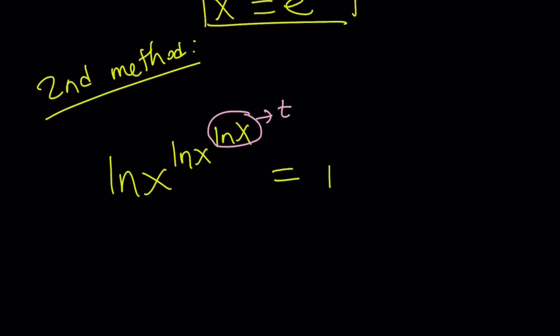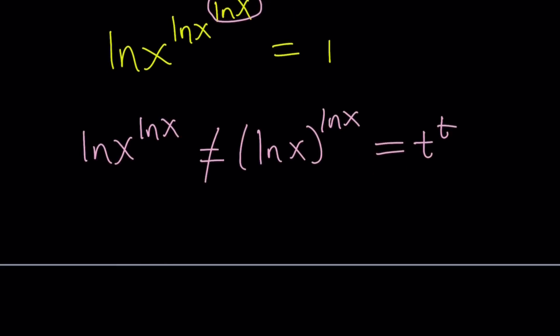Because if you write, what is ln x to the power ln x? Is it t to the power t? No. As I said earlier, this does not equal (ln x) to the power ln x. So you can't write it as t to the power t. We have something different. So we have to be very careful. If ln x is t from here, x becomes e to the power t. So that's what we've got to use.